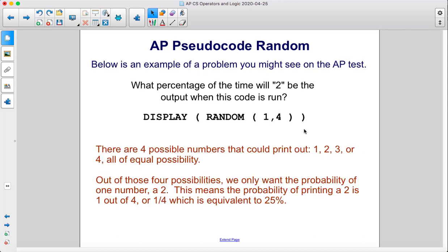There are four possible numbers that could print out: 1, 2, 3, or 4, all of equal possibility.